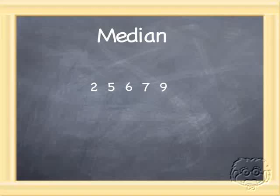Now you can probably eyeball the middle number here because we only have five numbers, but it's always helpful to do the cross-off method. We're going to cross off numbers from both sides, smallest, highest, second smallest, second highest, until we find the middle number, which is six.